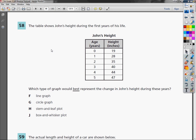Which type of graph would best represent the change in John's height during these years? Really, they want us to take the information, and since this is in column form, it means we have x values and y values.